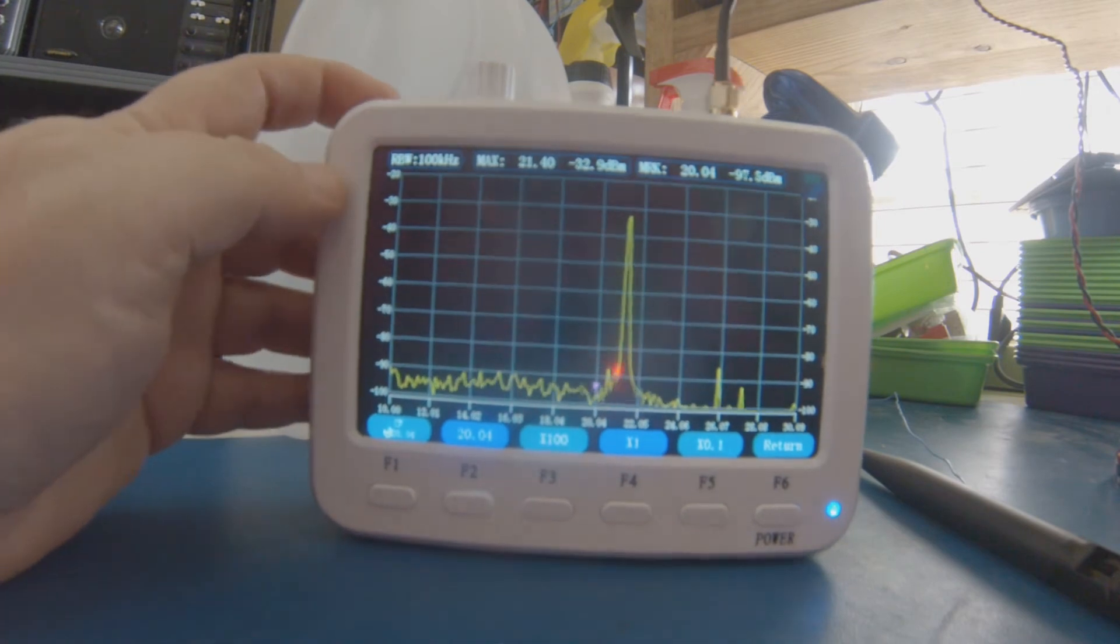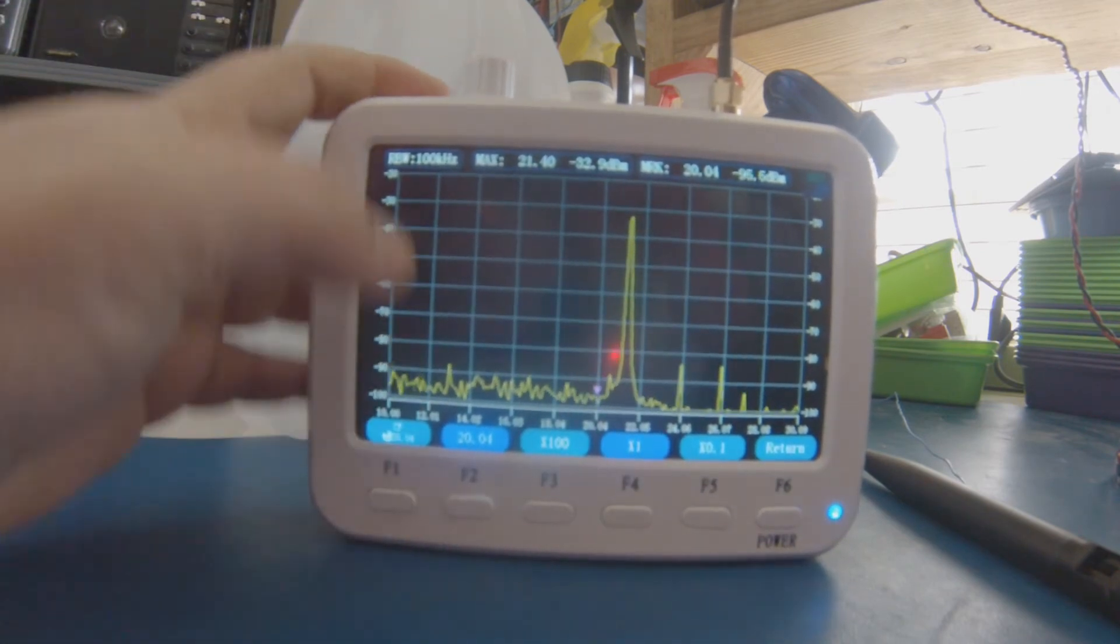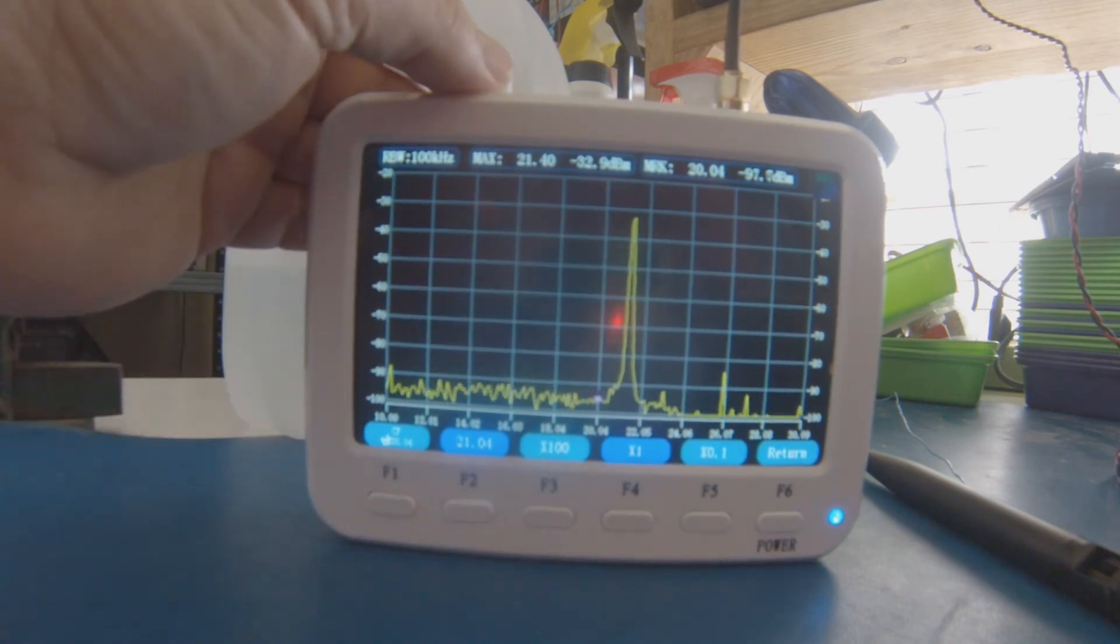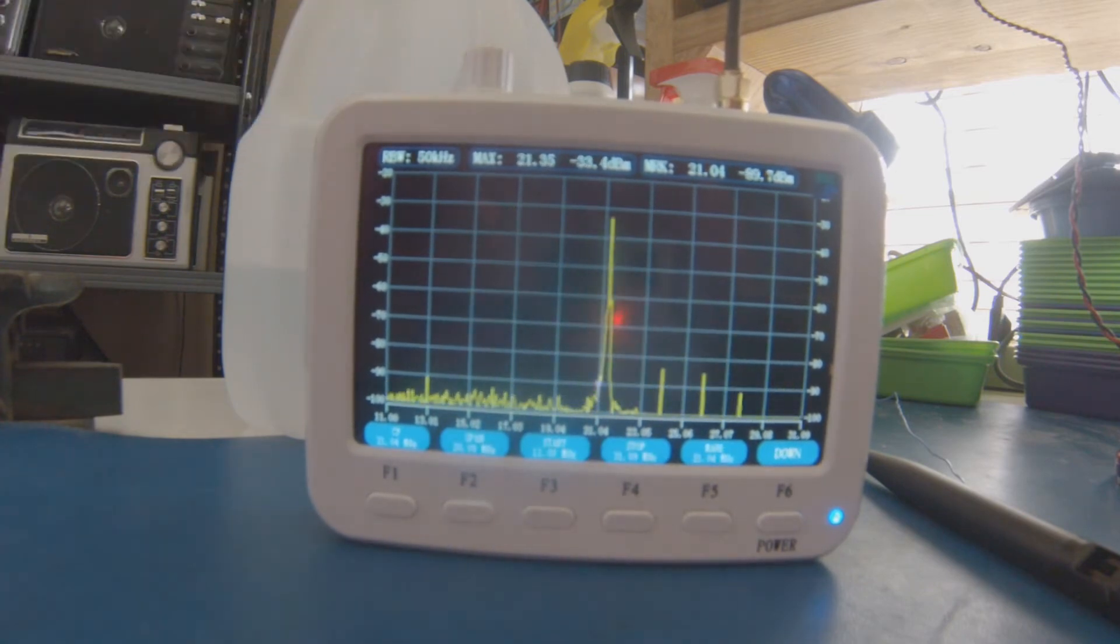So let me set the center frequency here to 21 since that's closer to my peak. I turn the scroll wheel to change it to 21, then push the scroll wheel to perform the action. There you see that my peak is shifted towards the center frequency, which is 21.04.